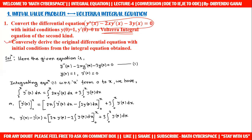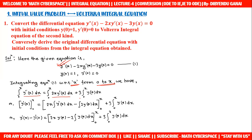In the second part, we convert the Volterra integral equation we obtain back into the original differential equation. The given equation is y''(x) − 2x·y'(x) − 3y(x) = 0, with conditions y(0) = 1 and y'(0) = 0. To get the integral equation, we integrate this ODE. Integrating from 0 to x: ∫₀ˣ y''(x) dx = ∫₀ˣ [2x·y'(x) + 3y(x)] dx.